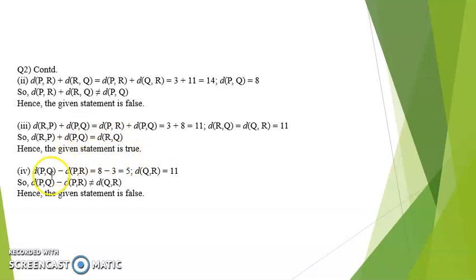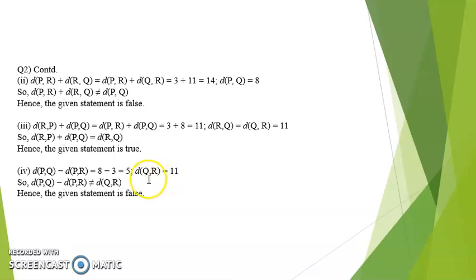Fourth one: distance PQ minus distance PR, that is 8 minus 3 which is 5, and this is not equal to 11, which is distance QR. Therefore statement 4 is false.